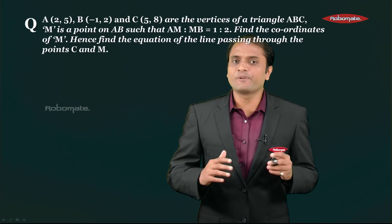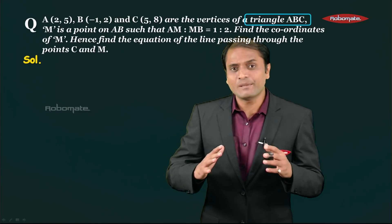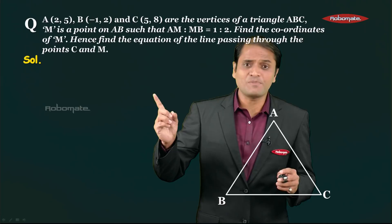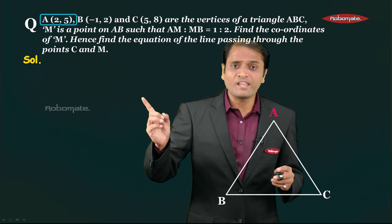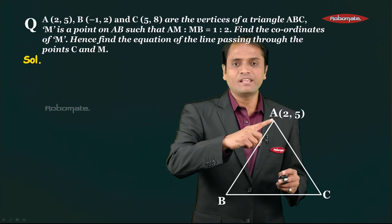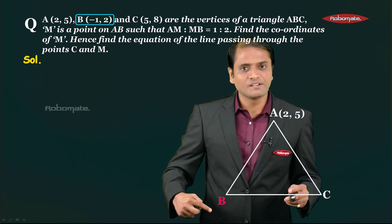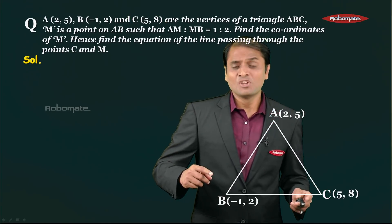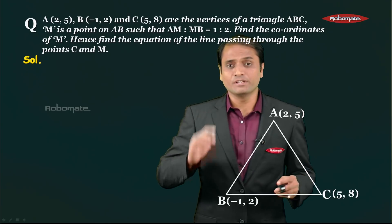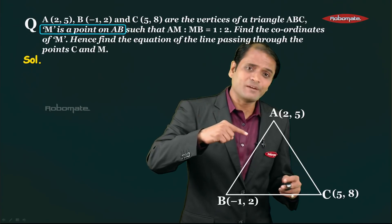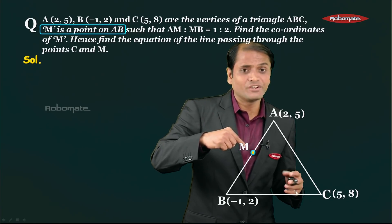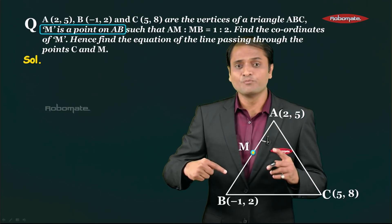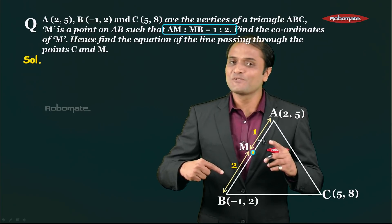First let us create a figure to represent this information. There is a triangle ABC, so let me draw triangle ABC. The coordinates of A are 2,5; B is -1,2; and C is 5,8. Now M is a point on segment AB, and we are told that AM to MB is equal to 1 to 2, so the ratio of these two parts is 1:2.